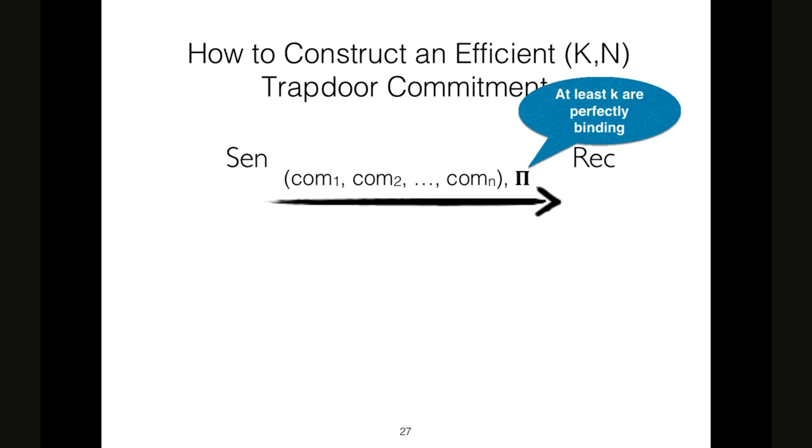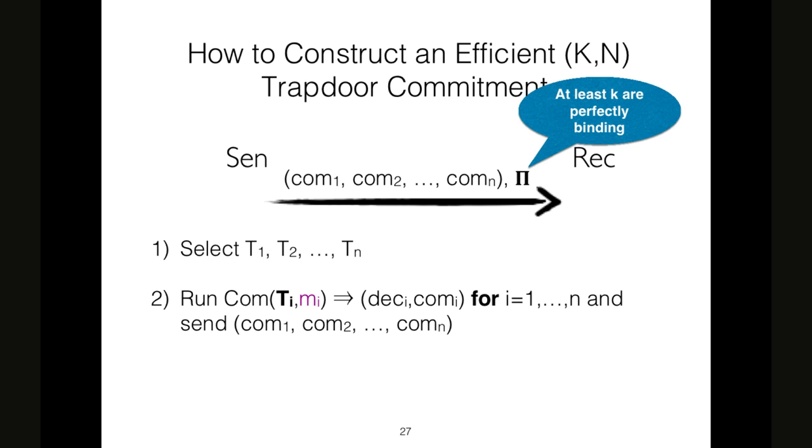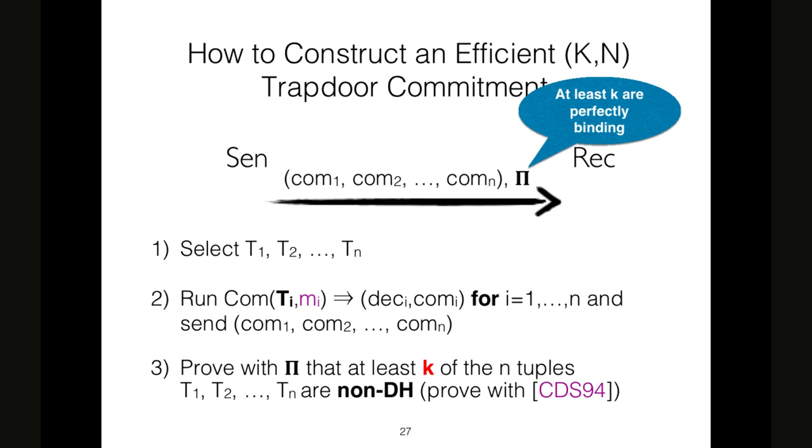So how do we mix these ingredients together? We have a sender that needs to compute N commitments. As a first thing, he selects N tuples. Run the instance-dependent trapdoor commitment by using as input each tuple once and commitment to a message MI. And this is how these commitments are constructed. And then the prover needs to compute this protocol PI. With this protocol PI, the sender proves that at least K out of N of this T1 to TN tuples are non-DH.